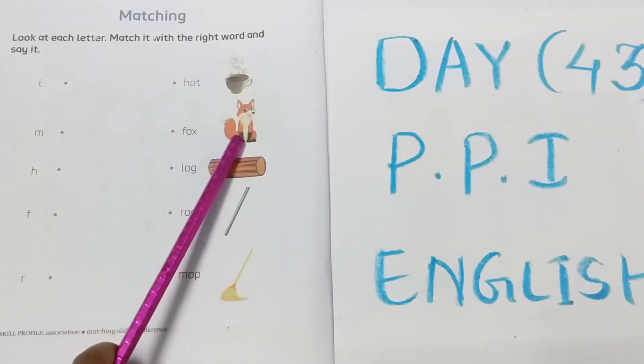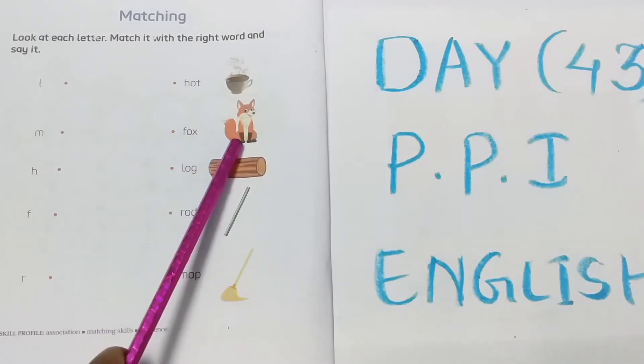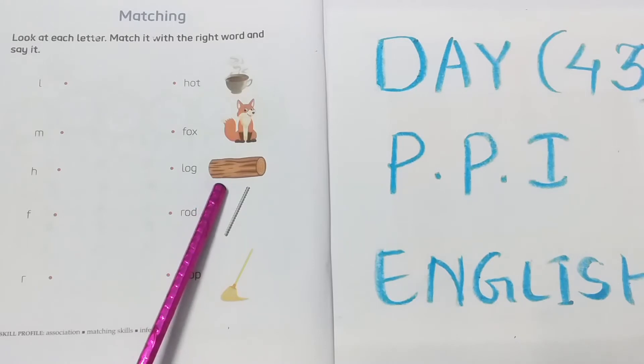The next picture is fox. The spelling of fox, F-O-X, fox. It's a log. L-O-G, log.